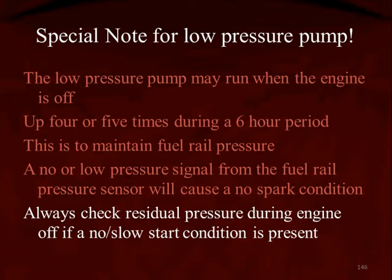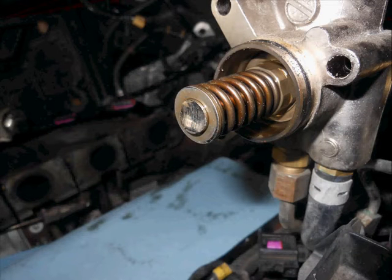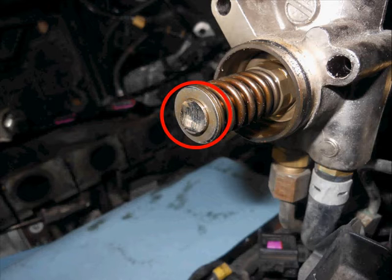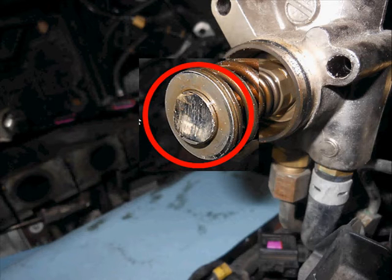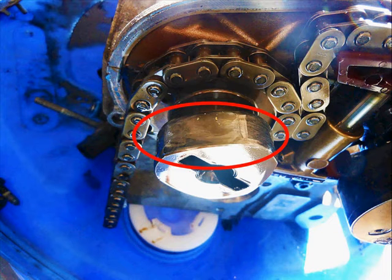Always check the residual pressure of the low pressure fuel pump for a no-start or an extended crank, because what supplies the high pressure pump is the low pressure pump. Here is the bottom of a high pressure pump — we can see where it has been riding on that special cam lobe from the camshaft. When we blow it up, we can see it's all wallowed out and worn out, and the cam lobe itself is worn out.